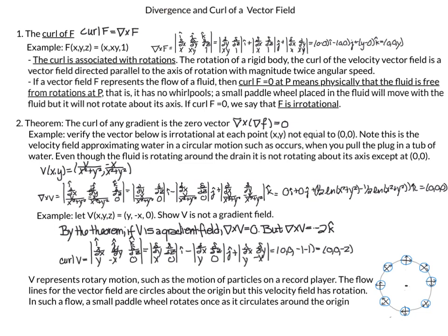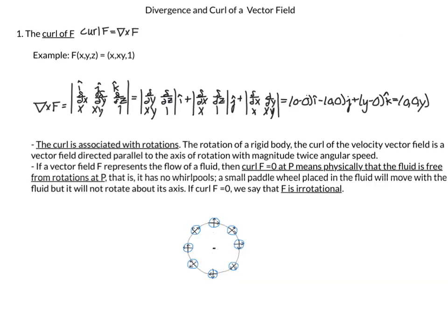Now that we've looked at an overview of divergence and curl, we will look at each topic in more detail with more illustrations and examples. We start with the definition of curl: curl of f, also denoted del cross f. Del is the partial derivative operator — d/dx, d/dy, d/dz. So del cross f has i, j, k direction vectors on top, del on the second line, and then f on the third line. With f equal to (x, xy, 1), the final answer is (0, 0, y).